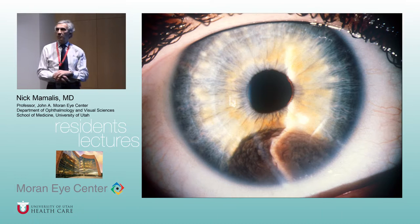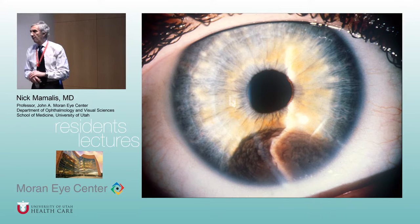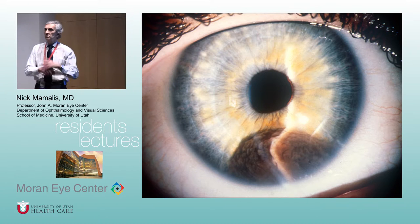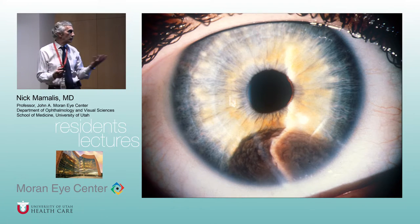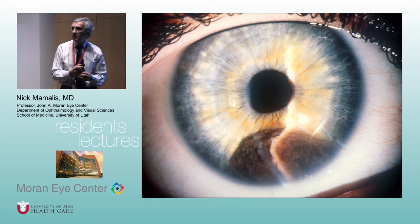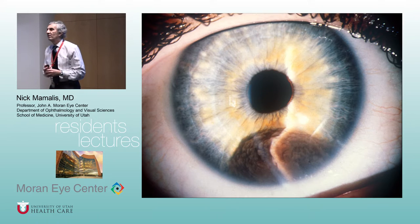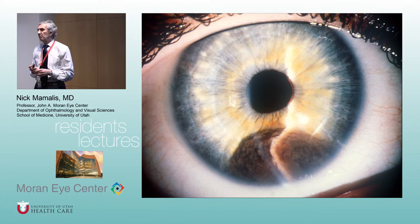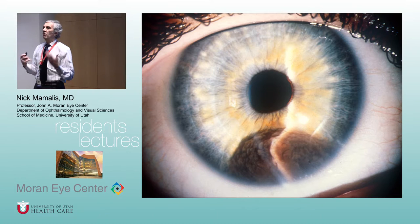This looks even more suspicious. On the slit beam, here's the beam on the cornea and here on the iris — the mass is almost touching the cornea. This is a very, very thick mass. The differential diagnosis here would be an iris melanoma. When I was trained, iris melanomas were really benign — 90% curable — but the reason is that what we were calling iris melanomas in the past were mostly nevi.